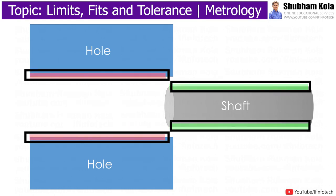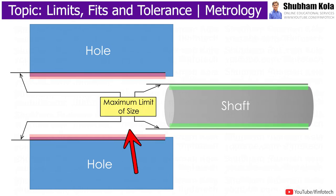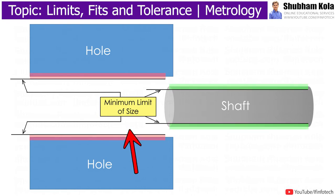Two extreme permissible sizes of a part between which the actual size is contained are called limits, where the maximum limit of size is the greater of the two limits, and the minimum limit of size is the smaller of the two limits of size.